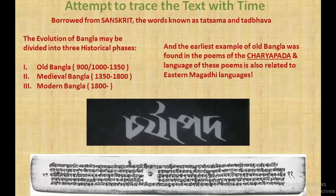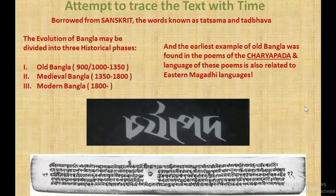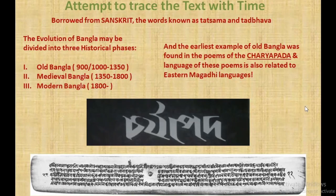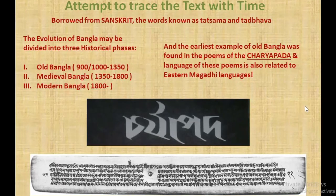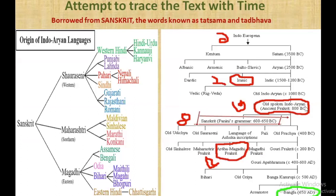Back then the Bengali language wasn't really identical to the way we see it today. Many of us are well acquainted with the Charyapada — in our Bengali grammar class we learned them as Chorjapav. The earliest example of old Bangla was found in the poems of the Charyapada, and the language of these poems is also related to the eastern Magadhi languages.